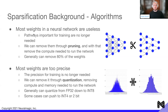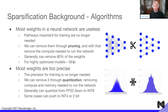Most weights in a neural network are actually useless — pathways that were important for training are no longer needed. We can remove them through pruning, and with that, remove the compute needed to run the network. Generally we can remove up to 80% of the weights, and for highly optimized models we actually get rid of 95% of the weights — only keeping 5% of that network, which was all that mattered for accuracy. Looking at a fully connected network, as we apply pruning we make it not so fully connected, removing weights and connections between nodes — that's what we call unstructured pruning.